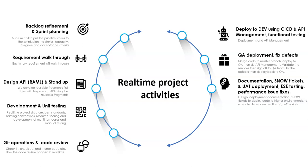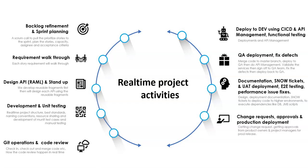The QA team will do end-to-end testing. If they find any issues with end-to-end or performance level testing, those will be intimated to the developer, who makes sure to fix those issues. The developer will also be working on production deployments — collecting test results, all required information, then requesting a change request, getting approvals from product owners and project managers, and then doing the production deployment. Once production deployment is done, the developer continues to monitor, support, and maintain the services.